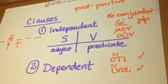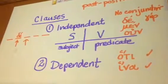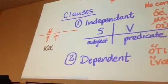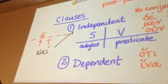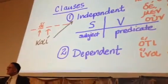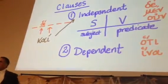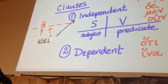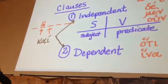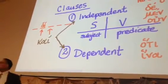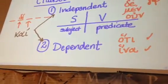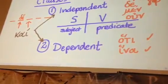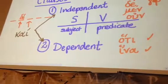Now, the conjunction chi can go either way. Chi connects like elements. So if it is at the beginning of an independent clause, it means it's connecting it to another independent clause. If it's at the beginning of a dependent clause, it means it's connecting two dependent clauses. And so chi will show up first in the clause, and it can be used either with independent or dependent clauses.